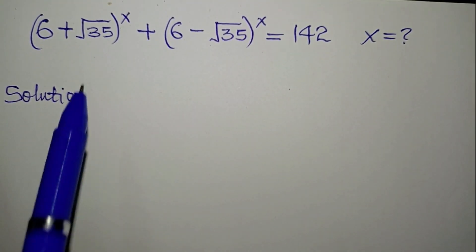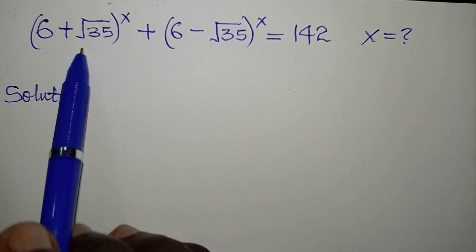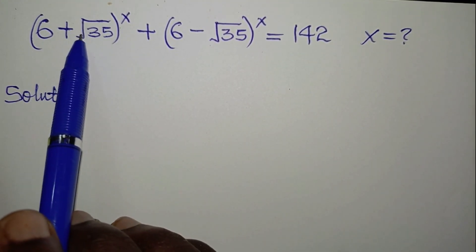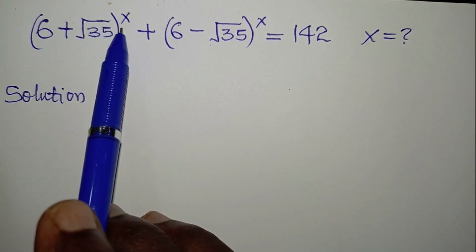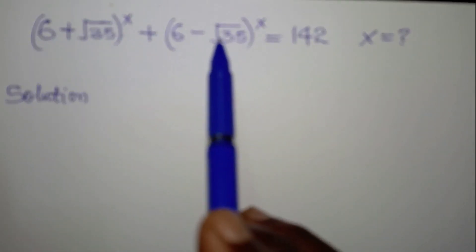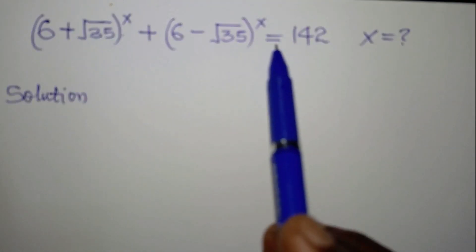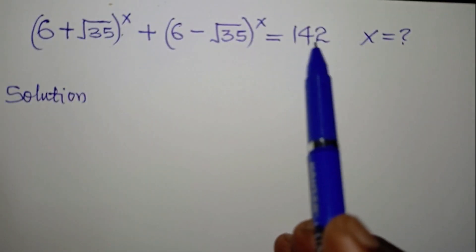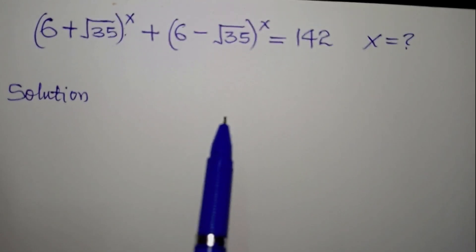Let's look at the equation carefully. We have (6 + √35)^x + (6 - √35)^x = 142. We want to find the value of x.